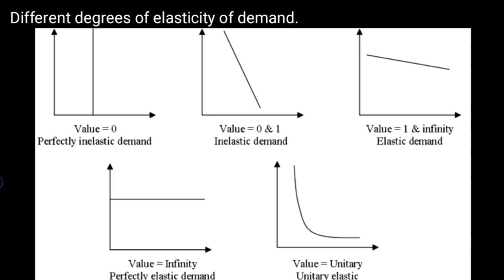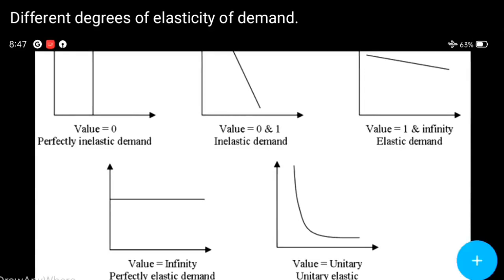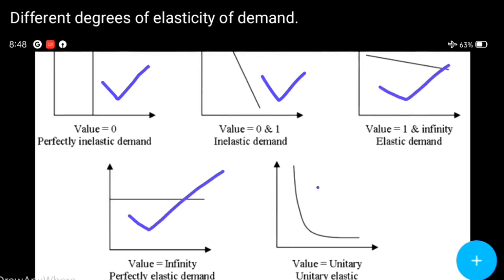This is the comparative analysis of the five degrees of elasticity of demand. The first is perfectly inelastic, then less elastic, then unitary elastic, then more elastic, and finally perfectly elastic.